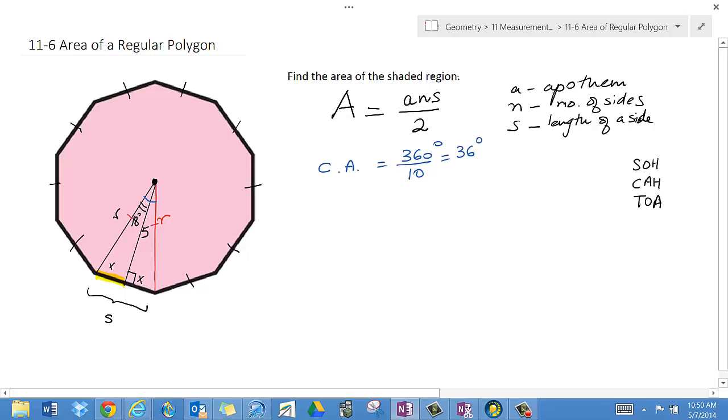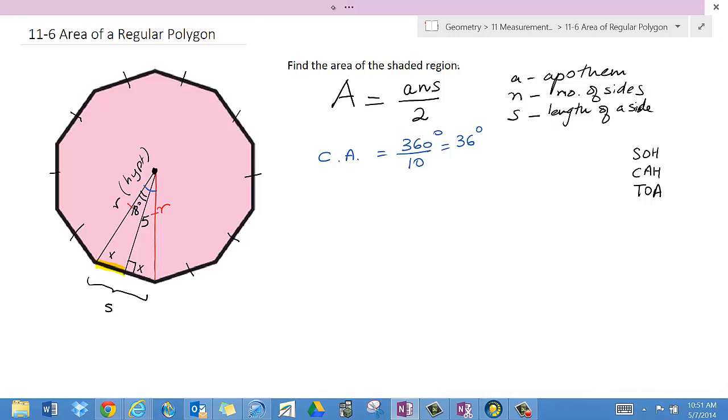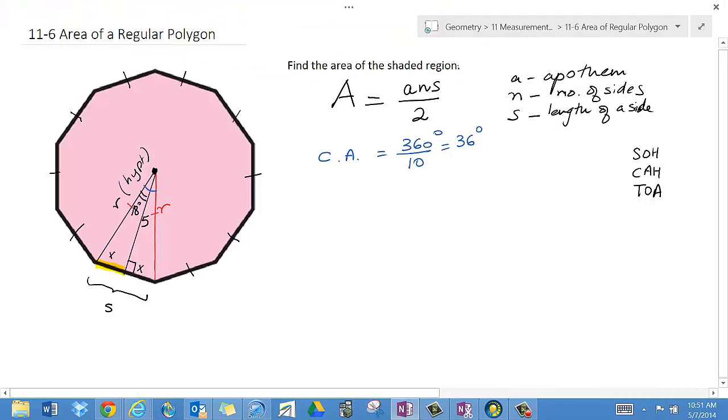SOH CAH TOA. Let me ask myself: R is the radius and that's also the hypotenuse. The side 5 is adjacent to the angle 18 degrees, so I'm going to say that's adjacent. And X is opposite.